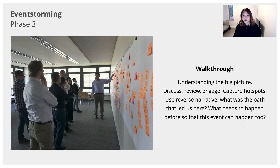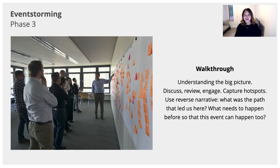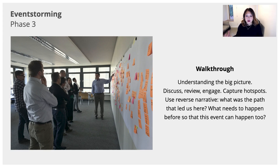The third phase is really about walking through the big picture. Now let's discuss between everybody the different events. The first thing to do is capture what we call hotspots. Hotspots are a point of contention in the organization around domains. This is when folks in the room start talking about what they believe a particular action should be from a user or use case. If there is some discussion around it, that means that contention is becoming unlocked, which is actually quite important during an event storming session.